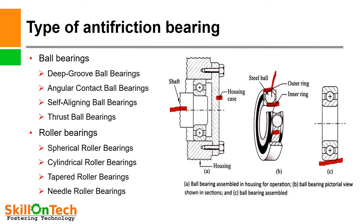Ball bearings include: deep groove ball bearings, angular contact ball bearings, self-aligning ball bearings, and thrust ball bearings. In roller bearings, rollers are used in place of balls — types include spherical roller bearings, cylindrical roller bearings, tapered roller bearings, and needle roller bearings.